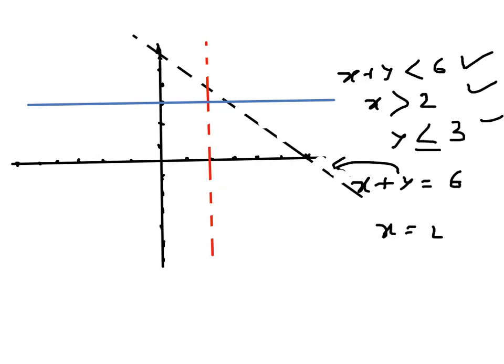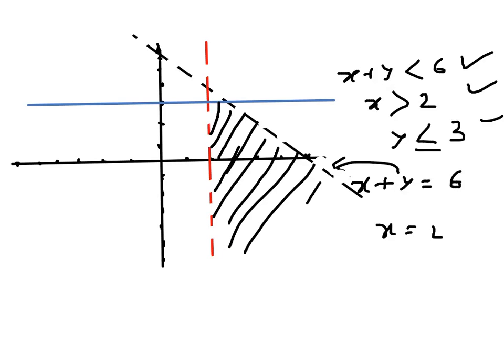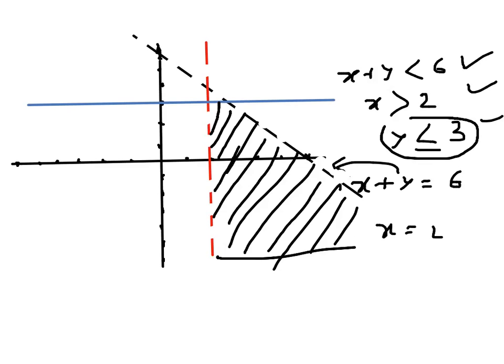y is less than 3, so that's below the blue line. x plus y is less than 6, so this is the region — going like this, bounded here. The region is below the blue line (inclusive), to the right of the red line (not inclusive, hence the dotted line), and below the x plus y equals 6 black line. That's how we draw this region.